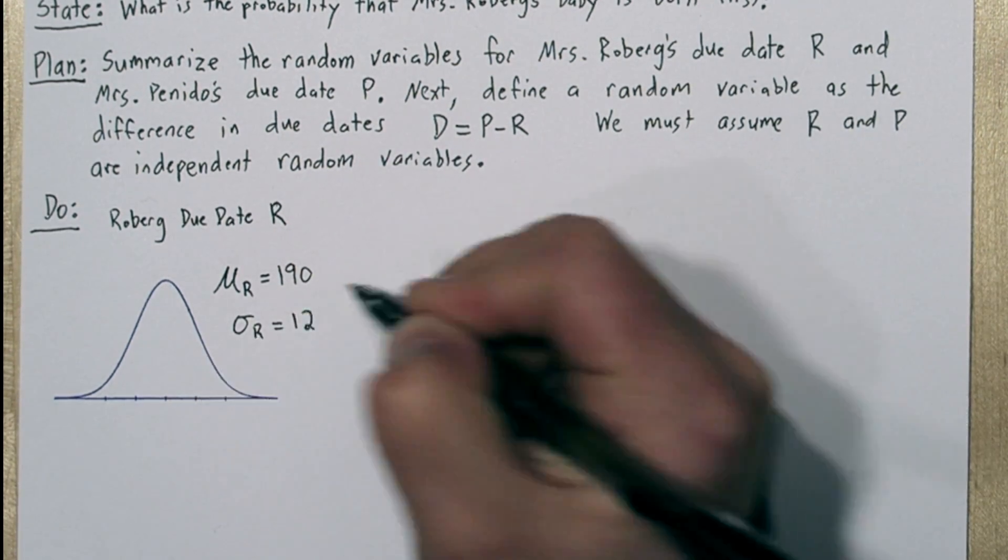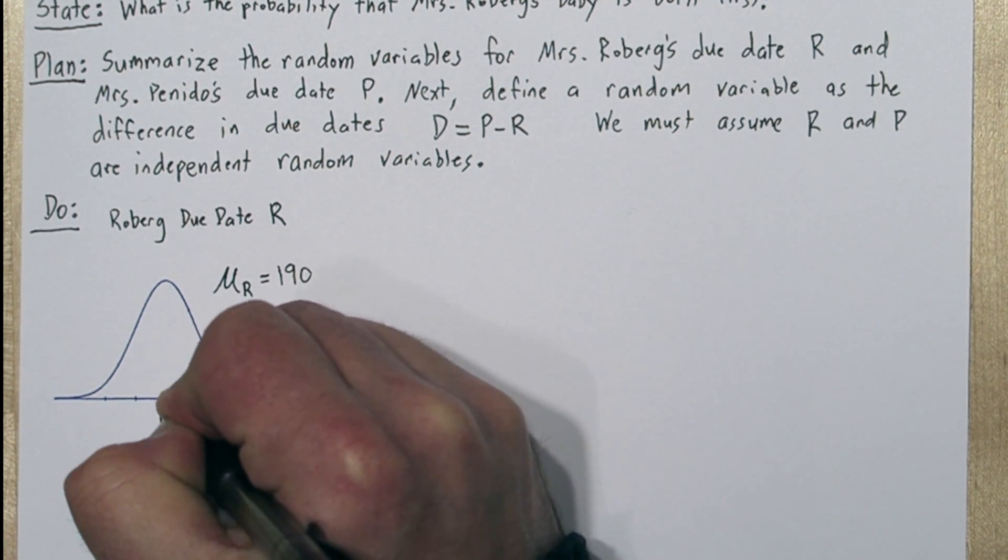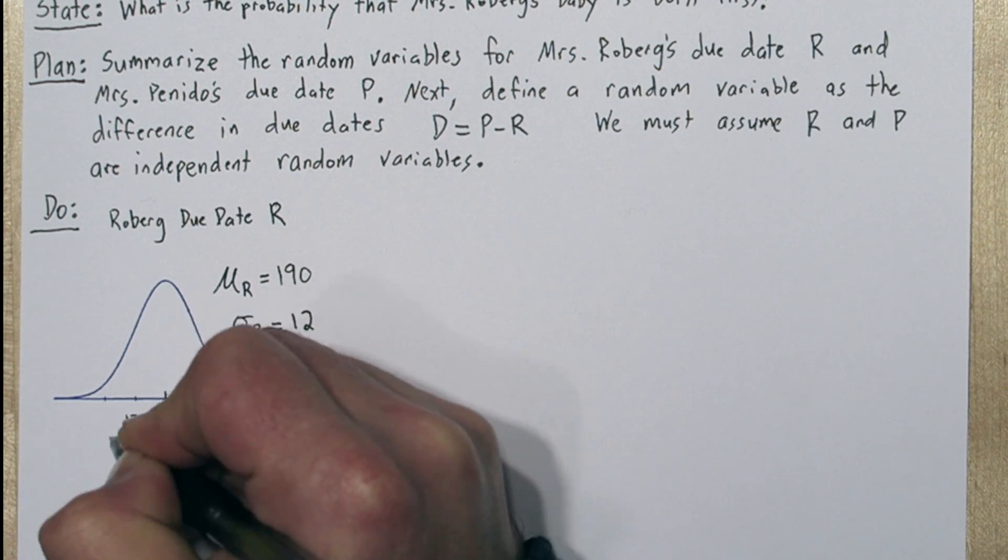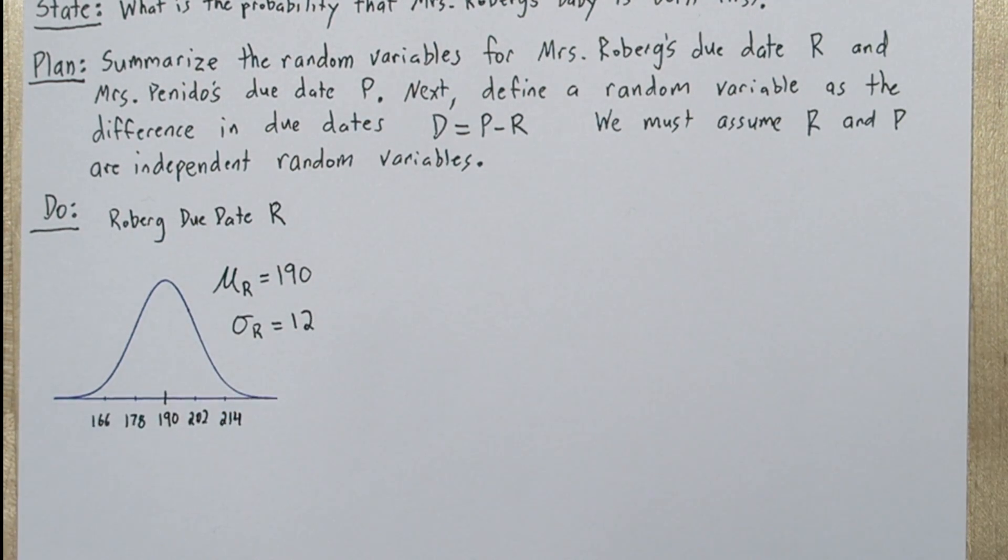Now the mean is 190 and the standard deviation is 12, so the middle of our distribution is at 190. That's the most likely time for the baby to be born, on its due date. But if we go a couple standard deviations in each direction, it wouldn't be unheard of for the baby to be born between any of these dates.